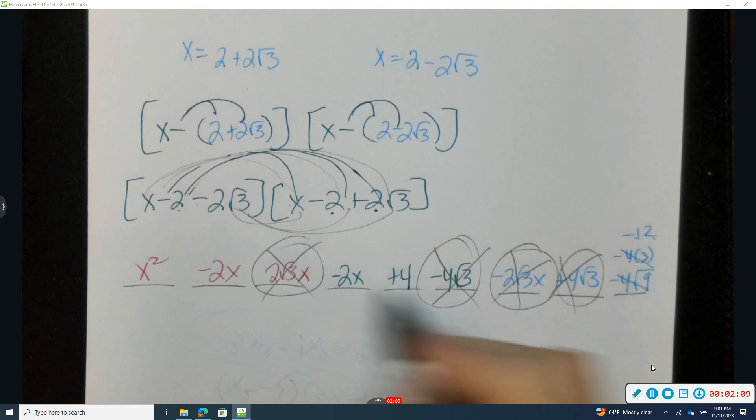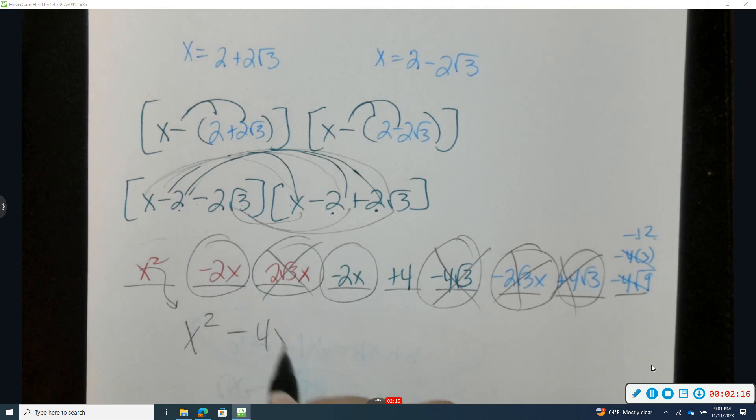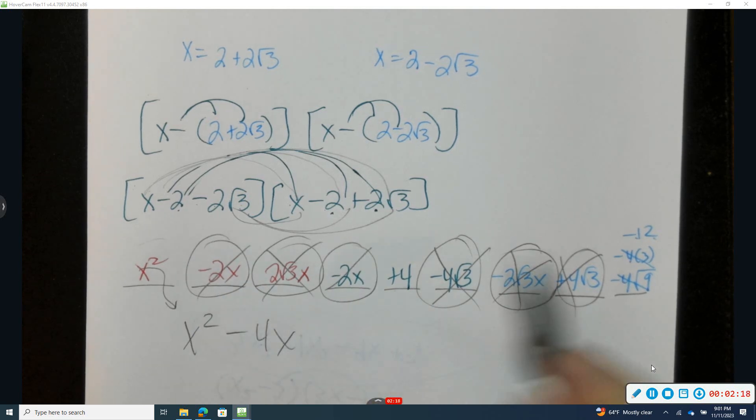So I'm left with x squared, negative 2x, negative 2x is negative 4x. And positive 4 minus 12 is negative 8.